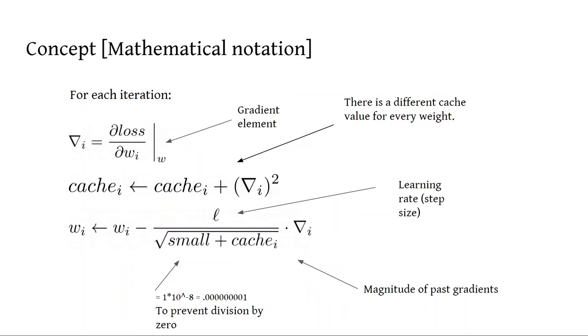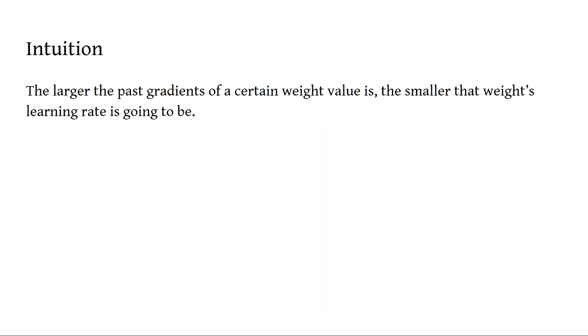So this cache value becomes the old cache value plus nabla sub i squared, where nabla sub i is the i-th element of the gradient vector. And under these circumstances, the update equation now becomes the old parameter minus the learning rate divided by the square root of some small positive number, to prevent division by zero, plus cache sub i. And then we multiply that by nabla sub i.